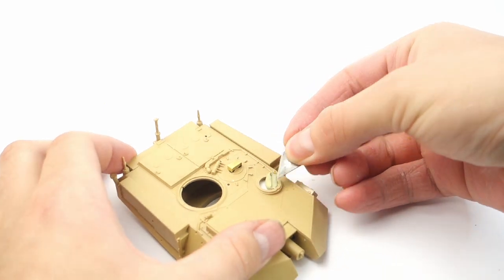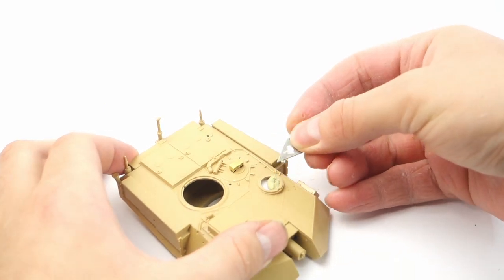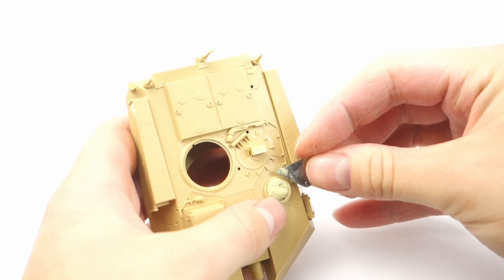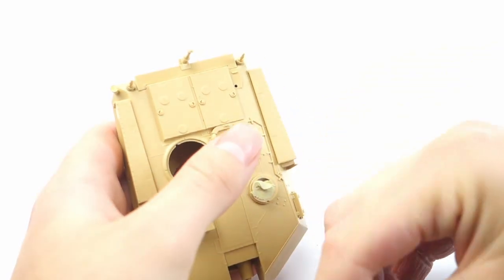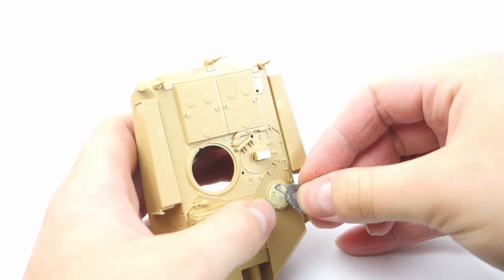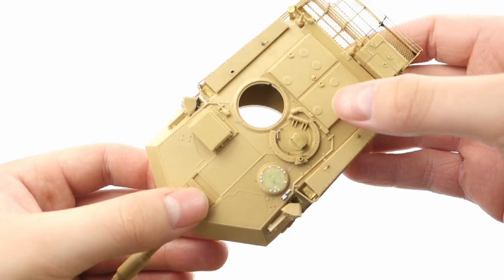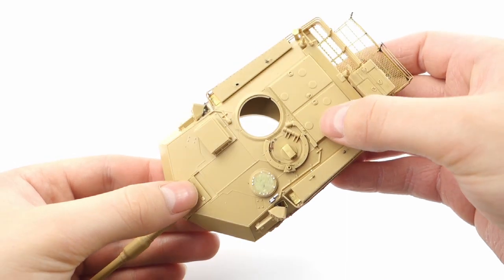The hole after CITV is filled with Milliput putty and smoothed using water. After it dried, I remove the excess using a file. I've decided that this way is easier and faster than cutting out another circle to replicate this cover. I also added the missing bolts on top of it after the putty dried.